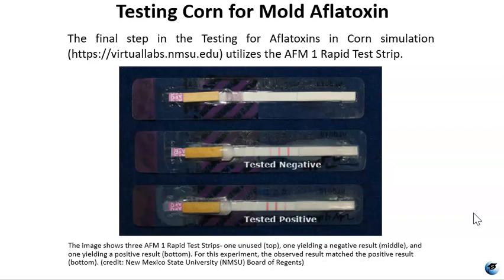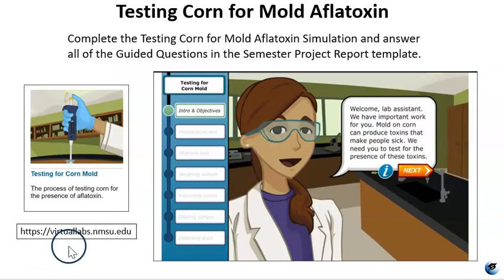This is what the test strip looks like — it is the final step in testing for aflatoxins in the corn simulation. The image shows three test strips: the one on top is unused, the one in the middle shows a negative result, and the one on the bottom shows a positive result. The URL shown here is where you will find the testing corn for mold aflatoxin virtual lab simulation. The simulation will take you step by step through the entire process. Be sure to note the procedural steps and results of each part of the tests so you can include them in your project report.